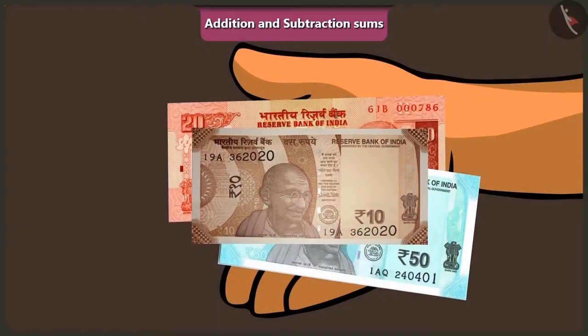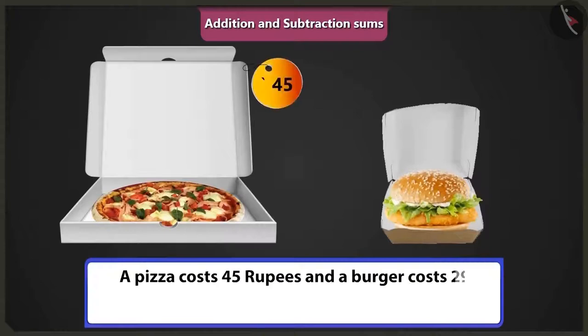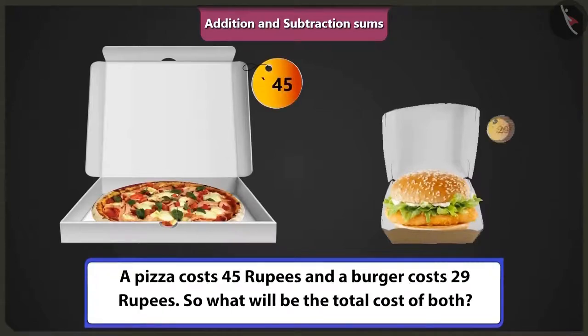Look, I have 80 rupees with me now. Chichi, tell me whatever you want to eat. I will call uncle at the hotel and order a pizza for you and a burger for me. Choo Choo, pizza costs 45 rupees and burger costs 29 rupees. So what will be the total cost of both?